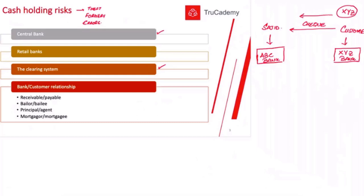My customer will send me the check of XYZ Bank. I will receive it and take this XYZ Bank check to my own bank. I cannot go to XYZ Bank because my personal business bank account is in ABC Bank. I will deposit this check in my own bank account, but my bank will not transfer the funds immediately — because ABC Bank doesn't know whether the customer's XYZ Bank account has sufficient funds or not.